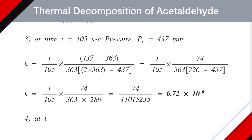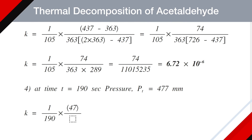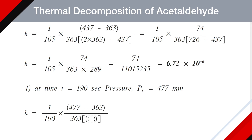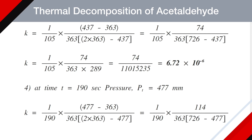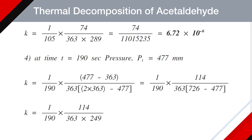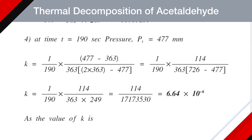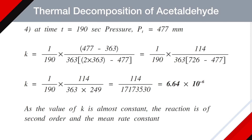In the last case at t = 190 s, Pt = 477 mm Hg: K = (1/190) × (477 − 363) / (363 × (726 − 477)) = (1/190) × 114 / (363 × 249) = 114 / 17,173,530 ≈ 6.64 × 10⁻⁶. As the value of K in all four cases is almost constant, the reaction is of the second order and the mean rate constant is 6.68 × 10⁻⁶.